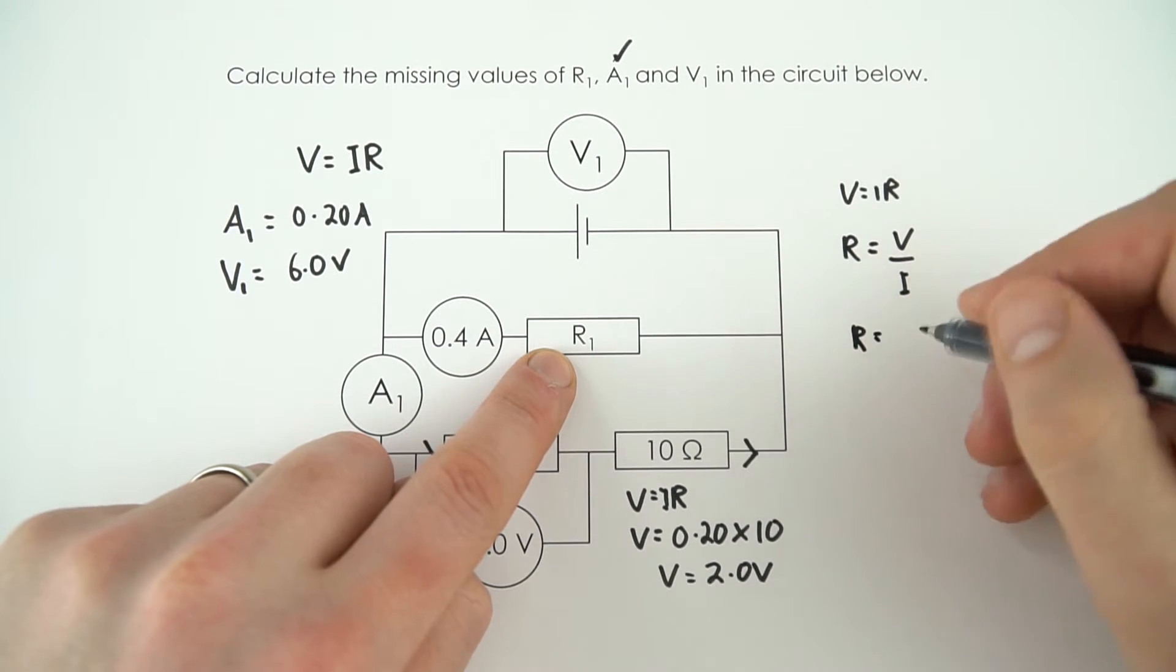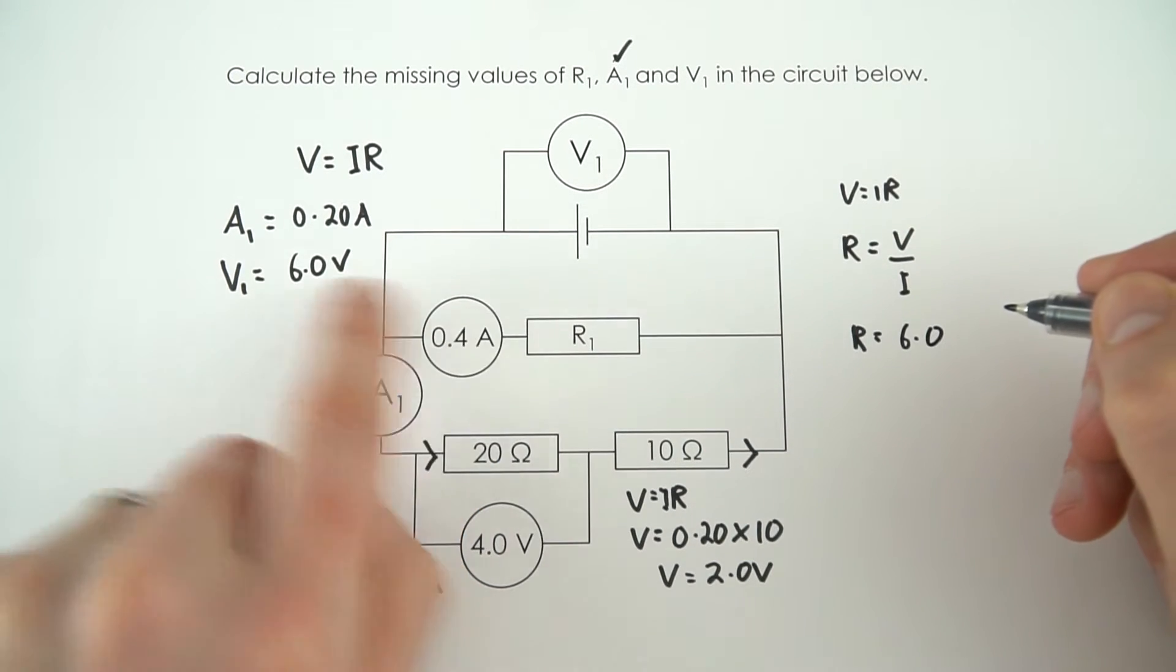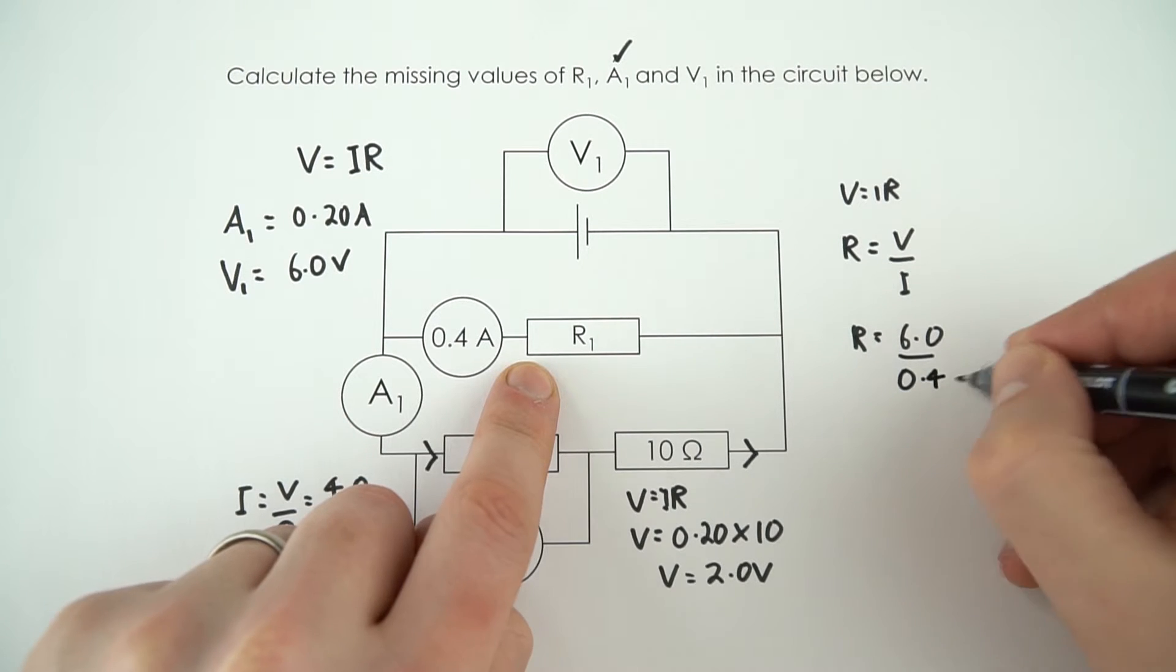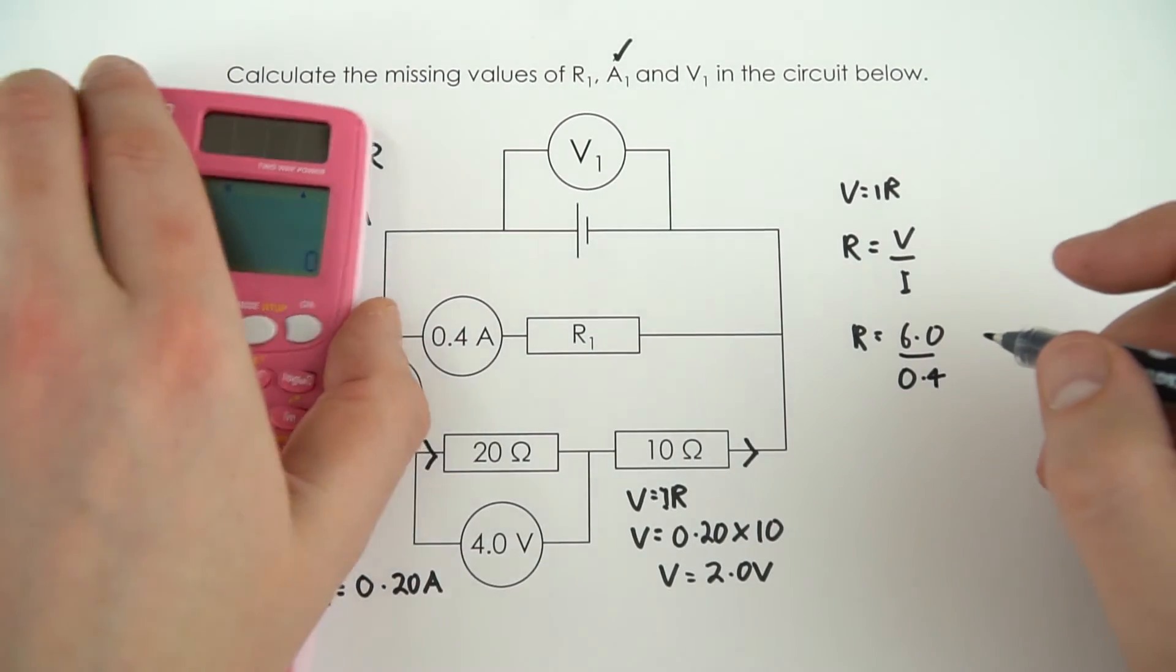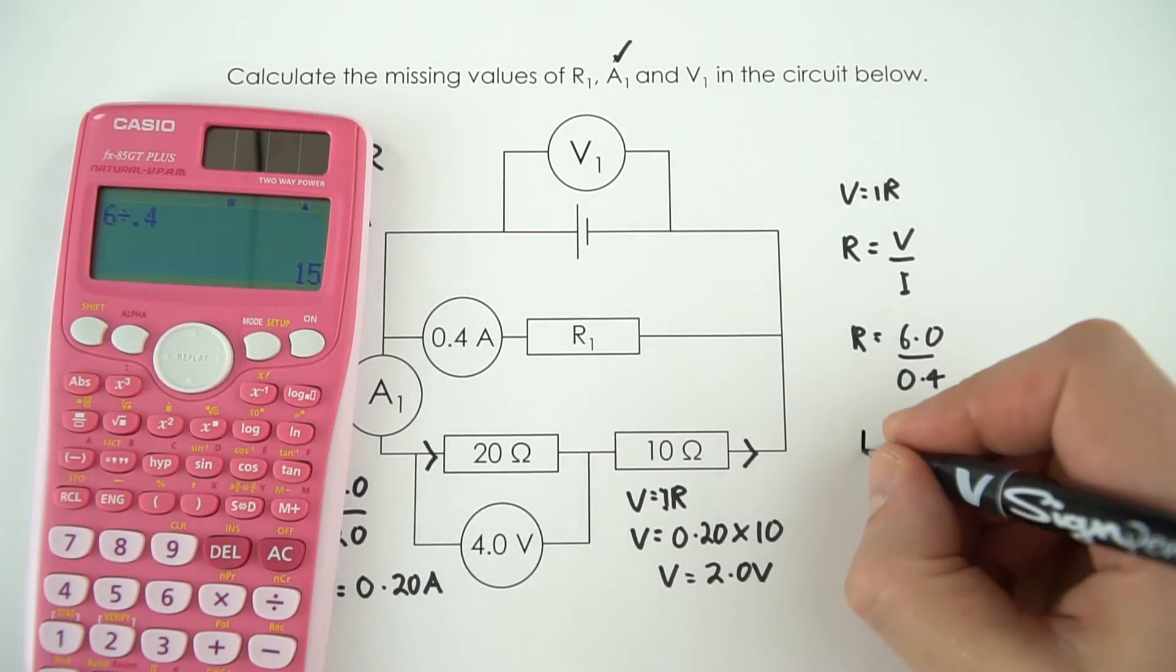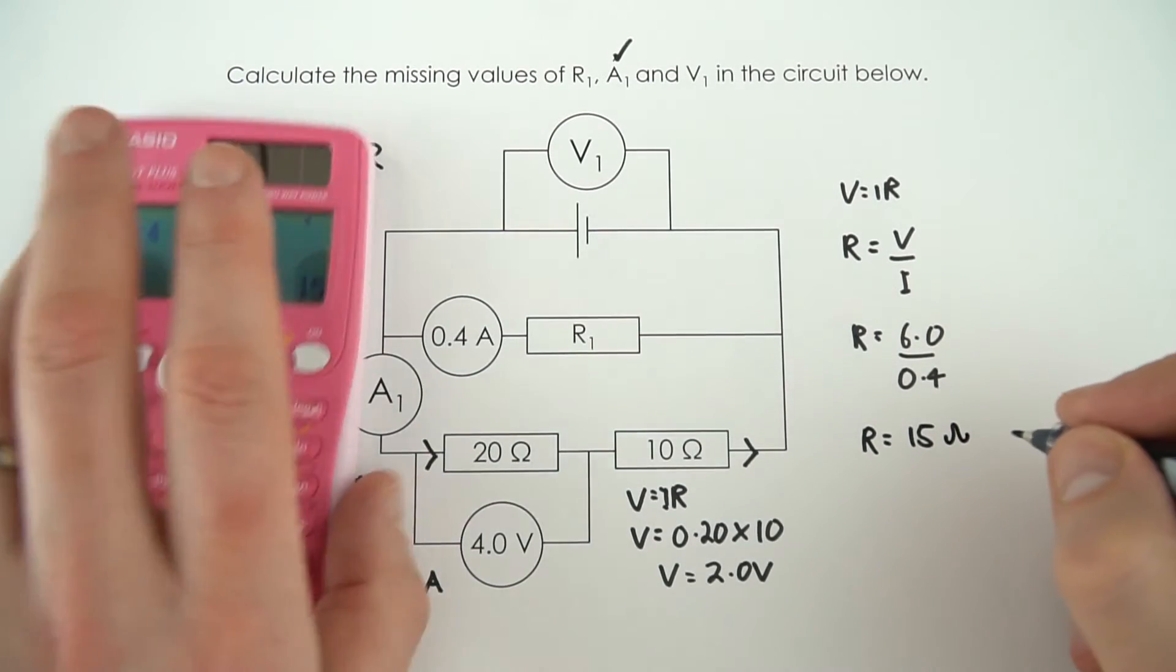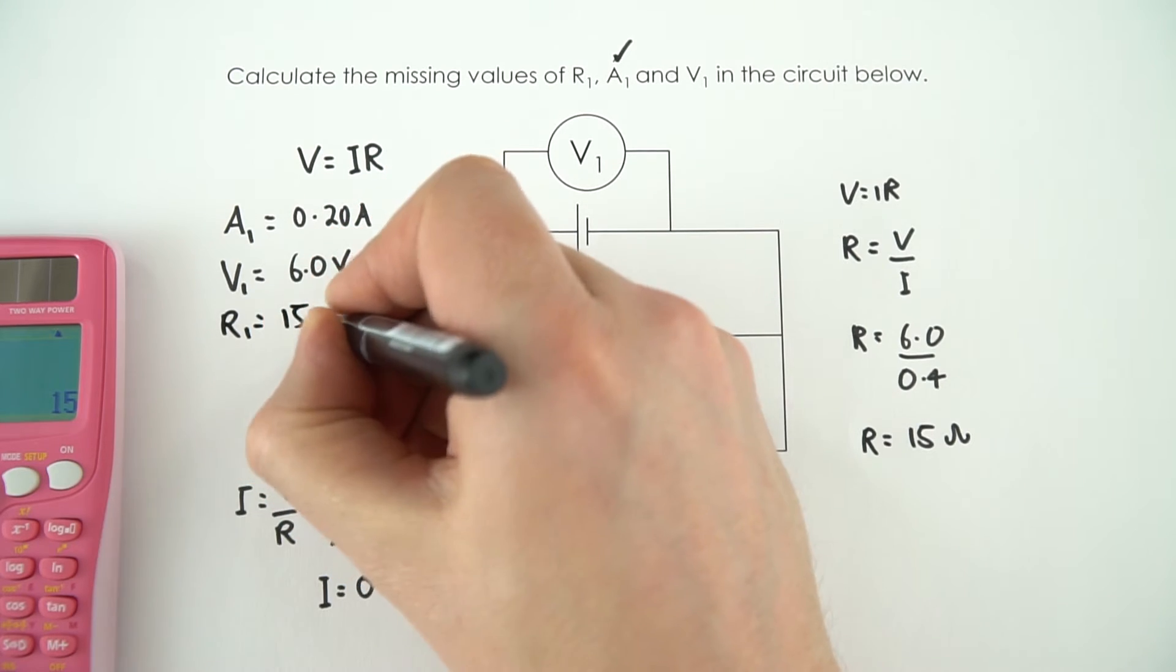So the resistance here is going to be equal to the potential difference, which is 6.0, that we worked out earlier. We divide that by 0.4, which is the current. Now, I could probably work it out in my head, but it's quicker just to use my calculator. 6 divided by 0.4, obviously it's 15, so obviously. R, here the resistance, is equal to 15 ohms. And again, I'm just going to write this very clearly, that R1 is equal to 15 ohms.